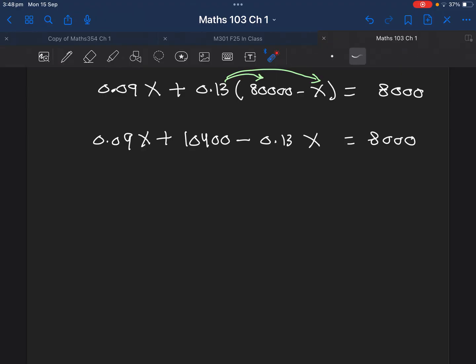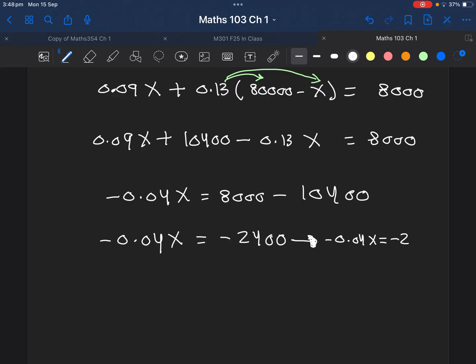We will add 0.09 minus 0.13. The answer will be negative 0.04X. If we take this one to the other side, it will go with a negative sign, so it will be 8,000 minus 10,400, which is the same as negative 2,400. So we have negative 0.04X equals negative 2,400.